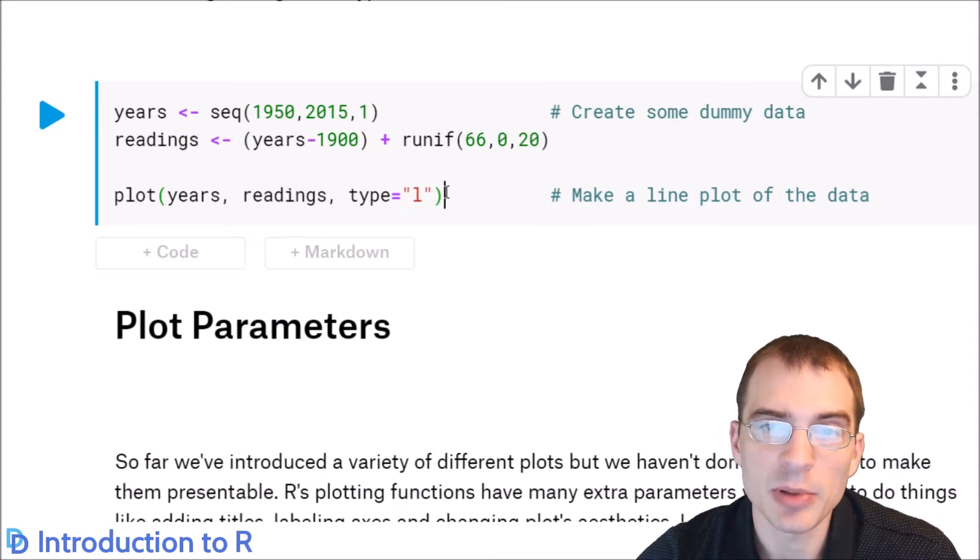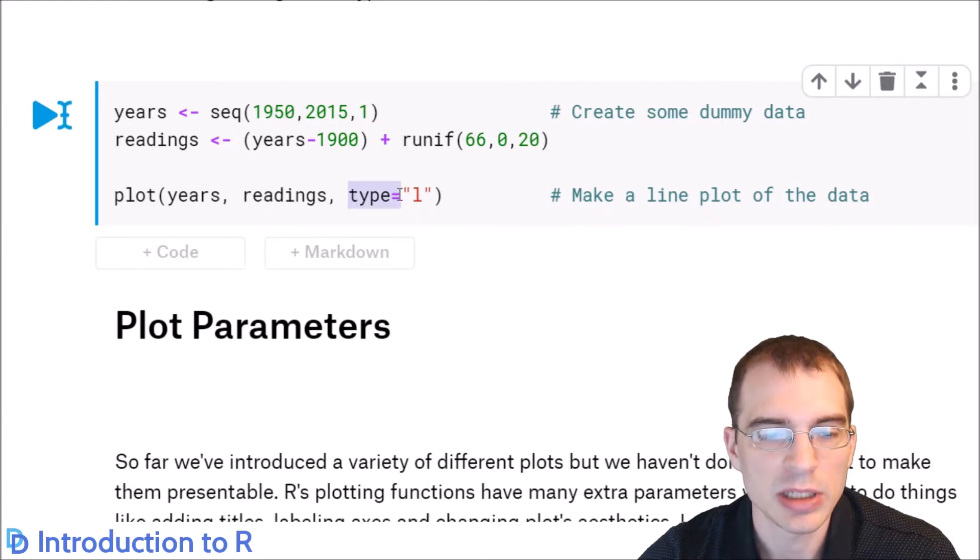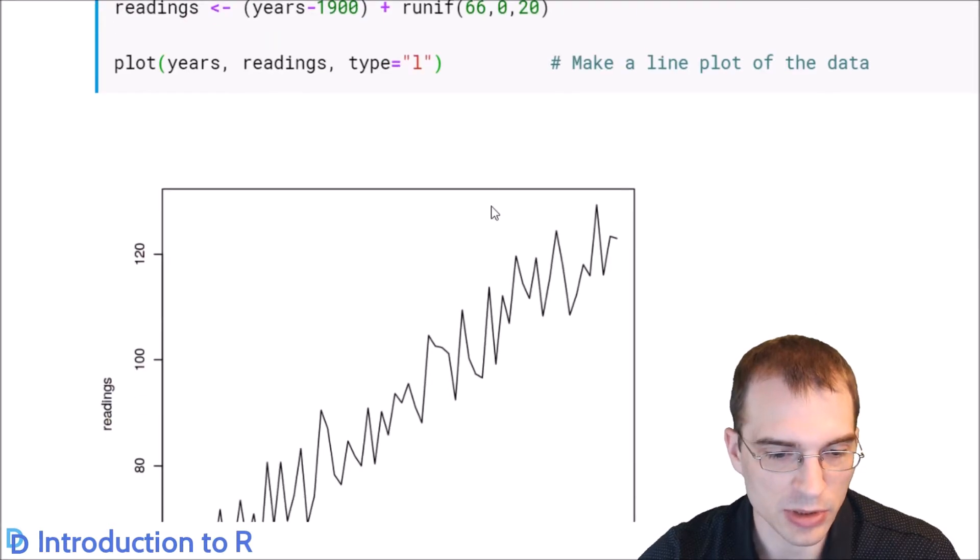To make a line plot, you just use the plot function again, just like we did for the scatter plot, except you set this extra argument type equal to the string L. And when we run that, it will create a line plot instead of a scatter plot. So let's see the result there.